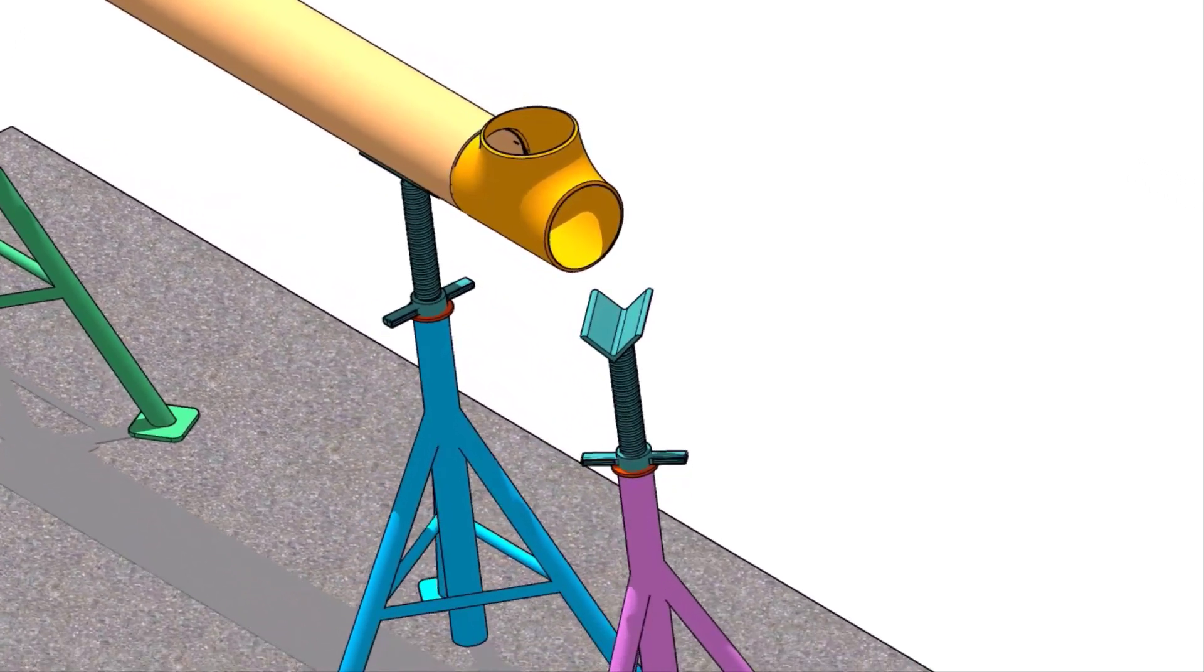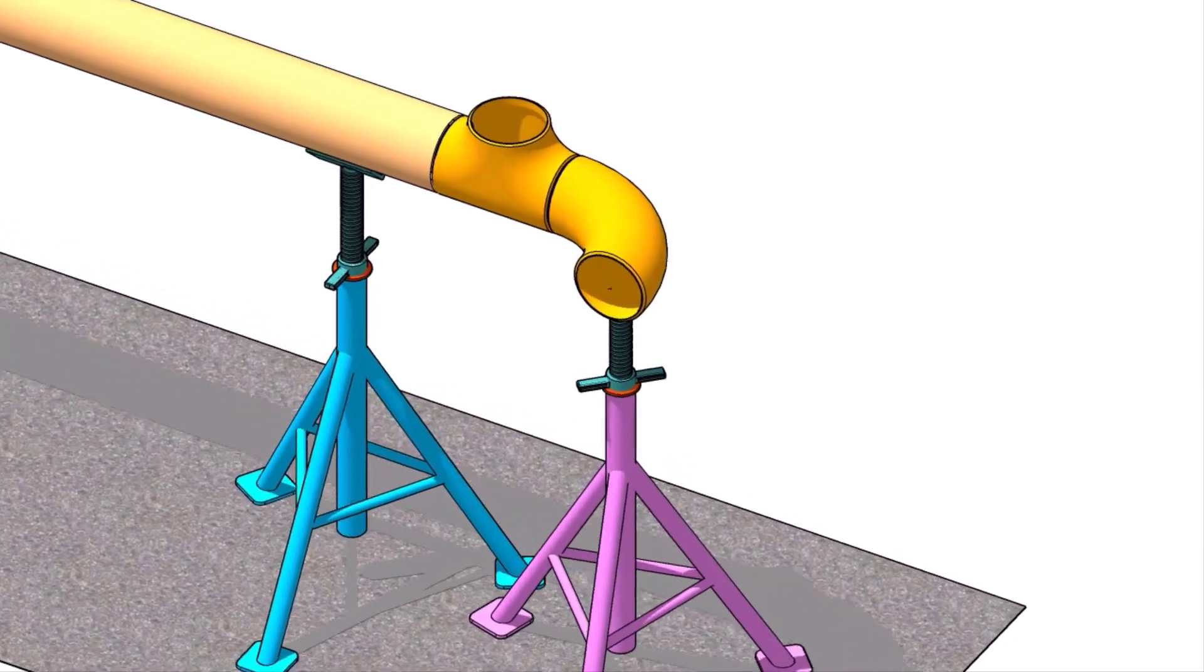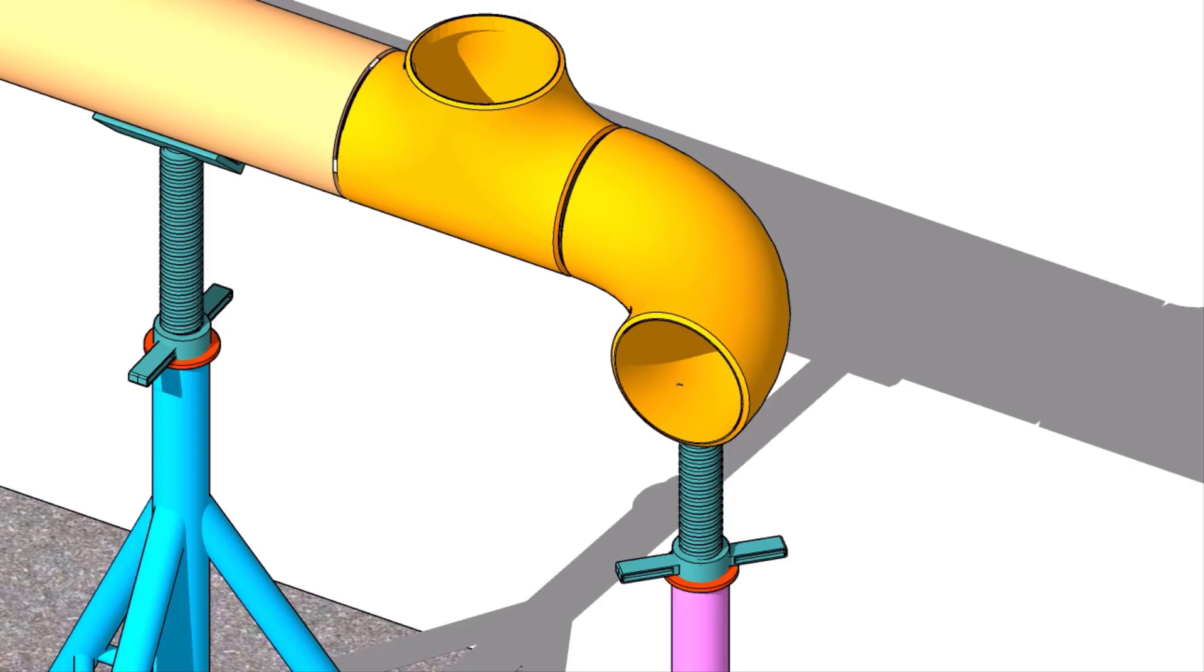Put an adjustable stand near the tee as shown. Put the elbow on the stand. Maintain the level. Put a gap rod in the joint and make sure the gap is equal all around.